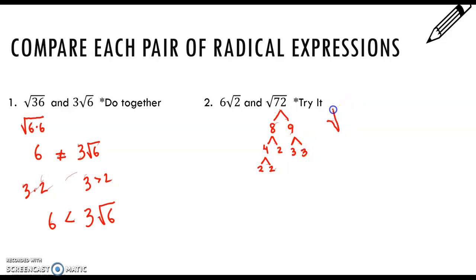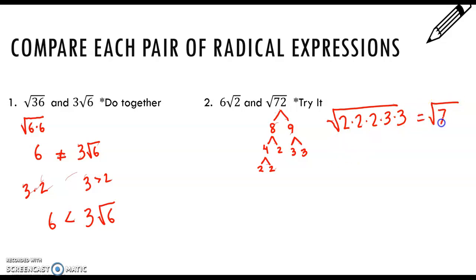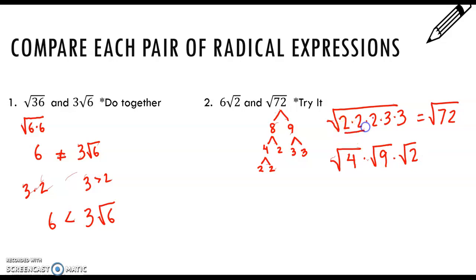So if I'm going to break up 72, I have 2 times 2 times 2 times 3 times 3 inside the square root. I had three 2's — two of them made 4, which has a nice square root, and then one more doesn't have a nice square root.